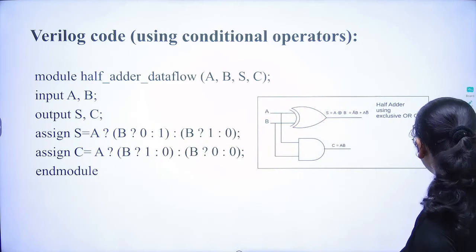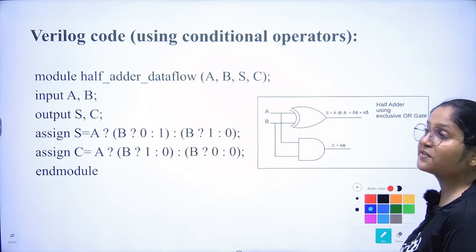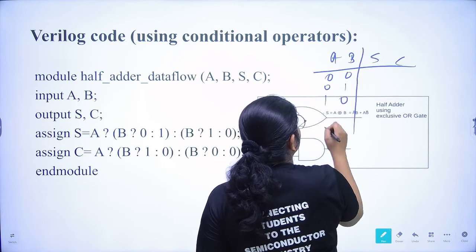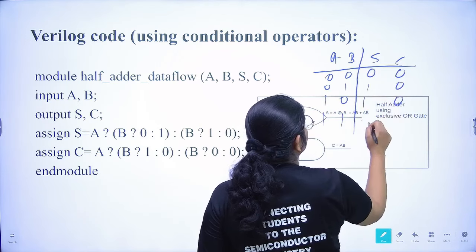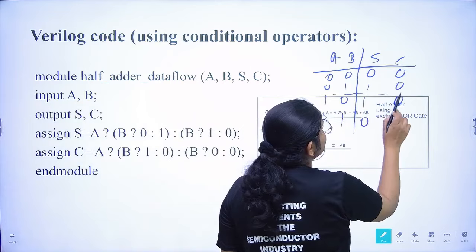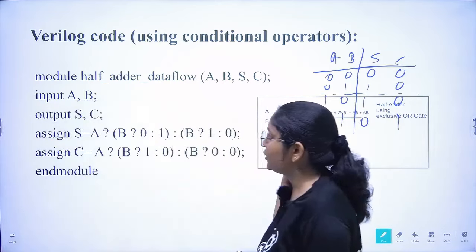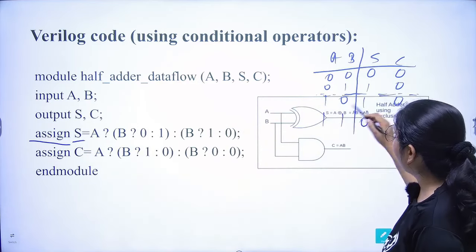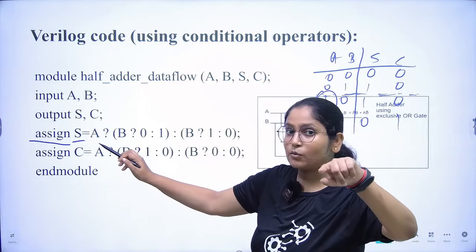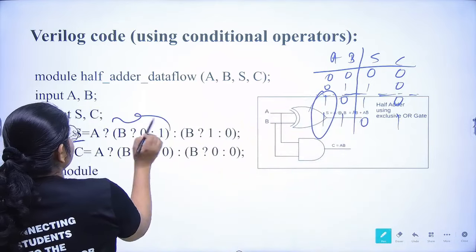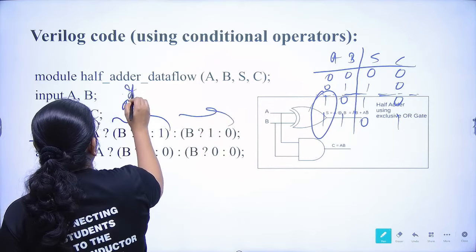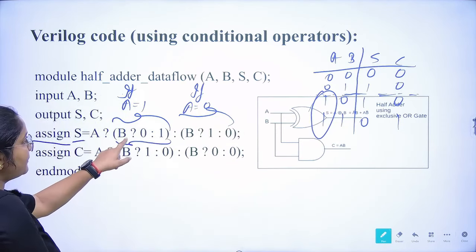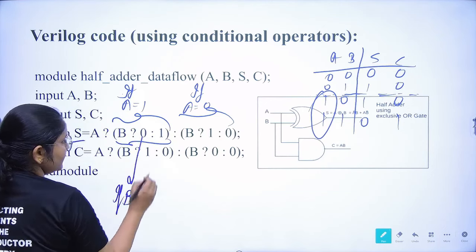Let's see the magic of conditional operators using the half adder truth table. The inputs are a and b. I write: assign f = ... and check the condition of a. If a is one, execute this part; if a is zero, execute that part. Inside each branch, I then check the condition of b.